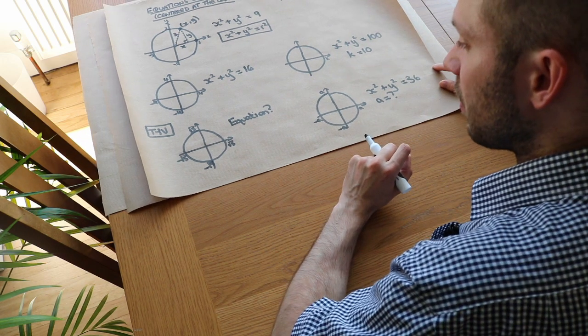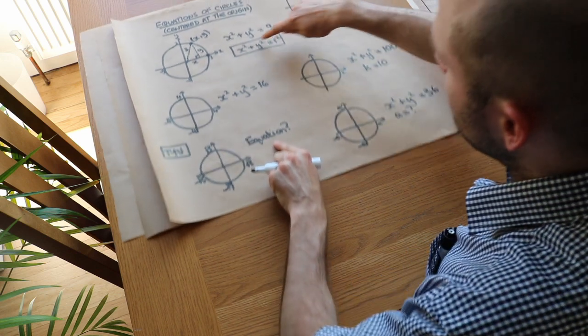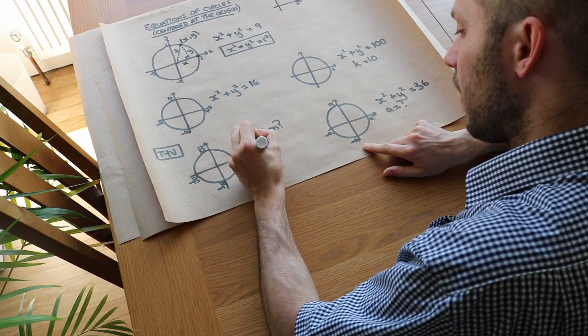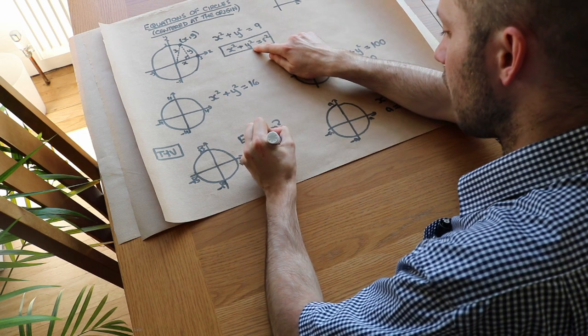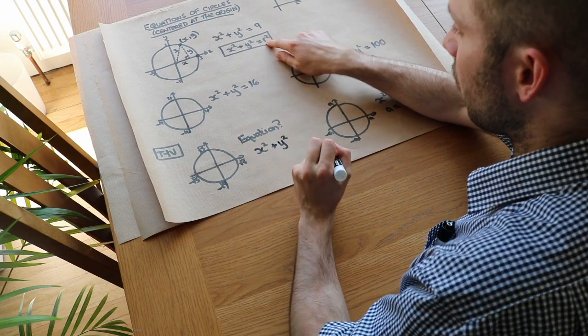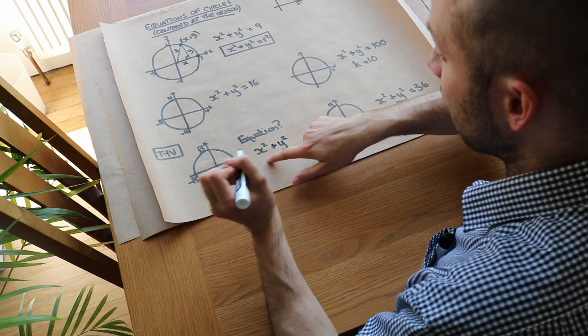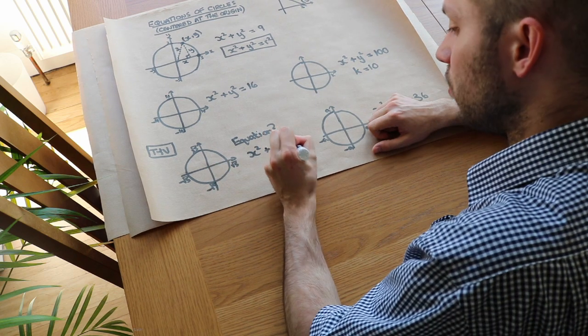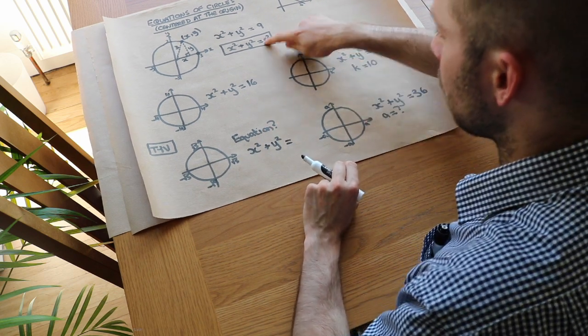Right, hopefully you've had some time to think about this one. Well, if we just use this equation again, we have x squared plus y squared. Note that x and y are variables here, whereas r is a constant. So x and y stay as variables, x and y, is equal to the radius squared, r squared.